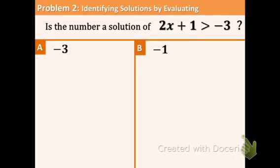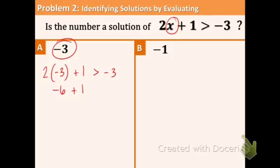Example 2 at the bottom of your page. Is the number a solution of 2x plus 1 is greater than negative 3? We've done this before with equations. What you're going to do is just plug the negative 3 in for the x. So we have 2 times negative 3 plus 1 greater than negative 3. 2 times negative 3 is negative 6. Bring everything else down. Combine like terms on the left. Negative 6 plus 1 is negative 5. Is negative 5 greater than negative 3? And the answer is no. It's more negative, so it's smaller. So we're going to say negative 3 is not a solution because it didn't work for the inequality.